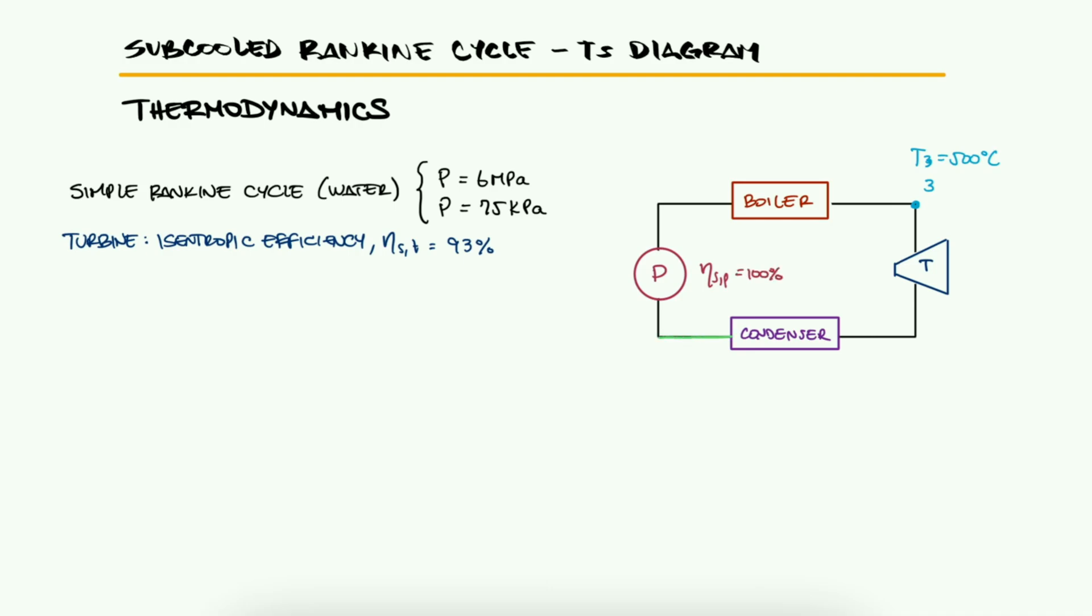The turbine has an isentropic efficiency of 93% and it is assumed that there are no losses at the pump. The water leaving the condenser is subcooled by 11.76 degrees Celsius. Draw a TS diagram of this cycle including the temperature values for all four states. You can leave the specific entropy values as variables. As usual, try pausing here for a minute and solve this yourself before watching the solution.